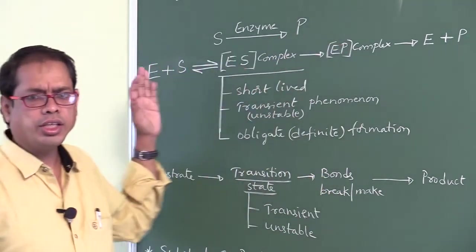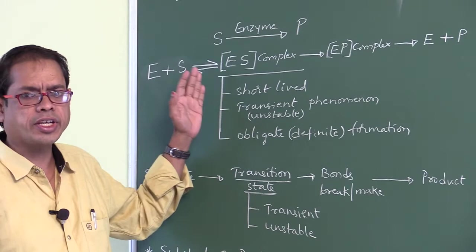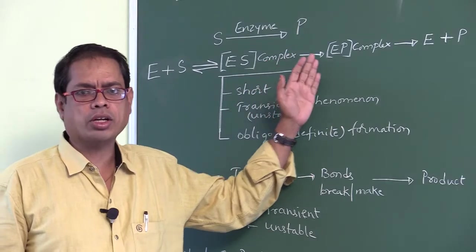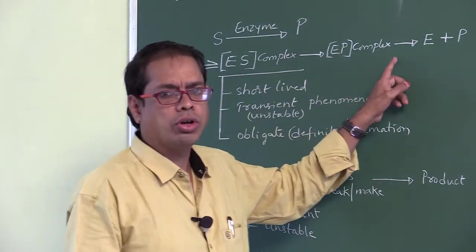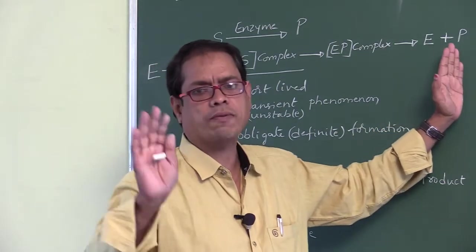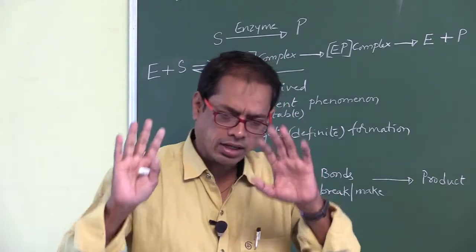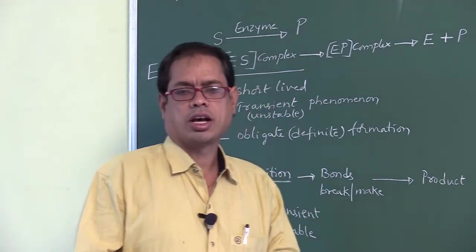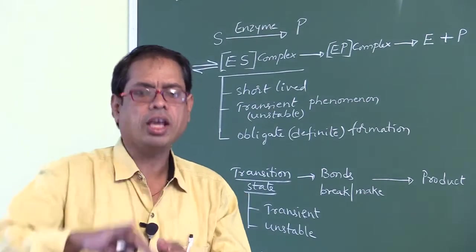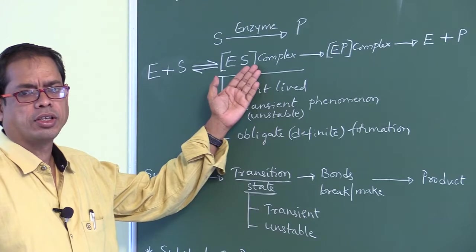E plus S gives rise to enzyme-substrate complex, gives rise to enzyme-product complex, EP complex gives rise to enzyme and products. If 10 grams of enzyme is used, at the end of the reaction also 10 grams of enzyme is present. The enzyme is unchanged, both qualitatively and quantitatively.